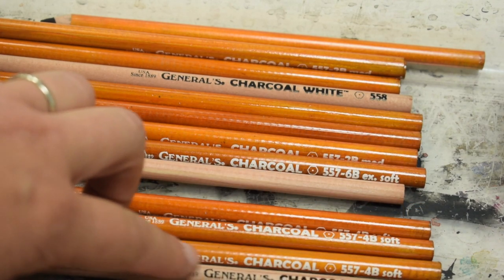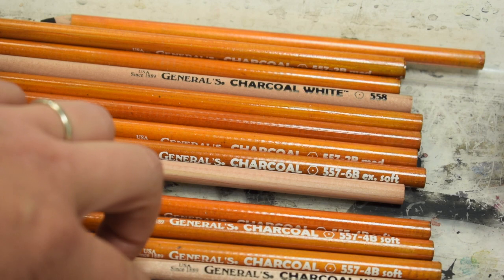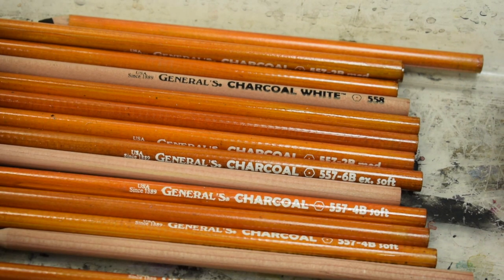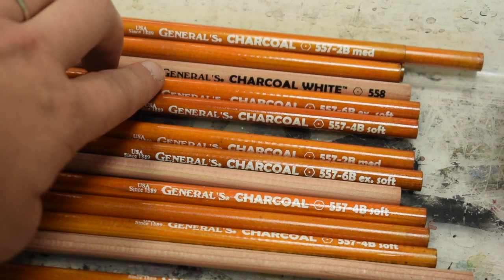You can tell the type of pencil it is by the number it says on the side. So it says charcoal and then it has some three-digit number, but you want to look at the 4B, the 6B, the 2B, the white. That's what you should be concerned with.